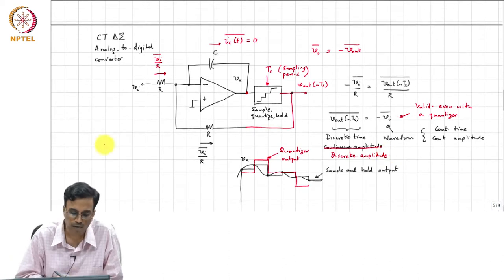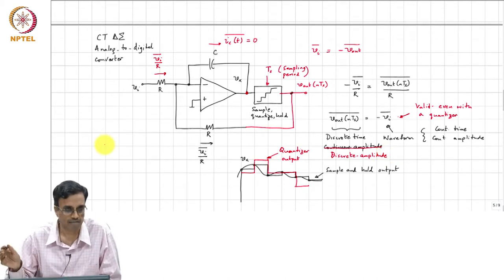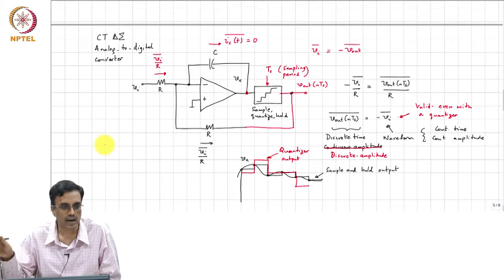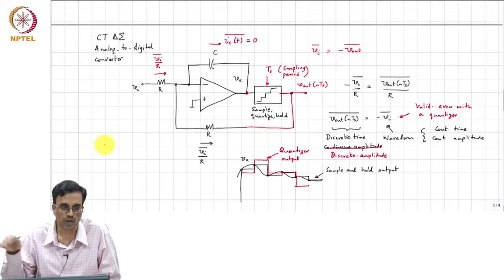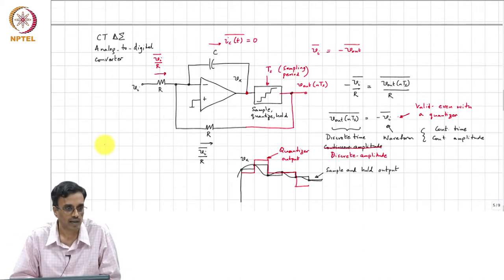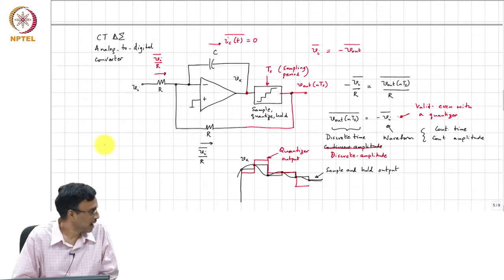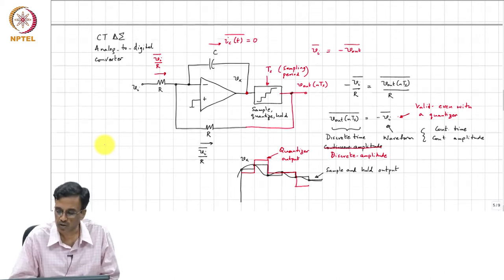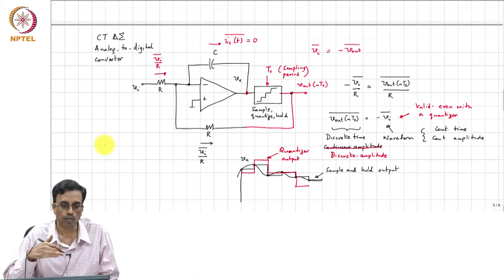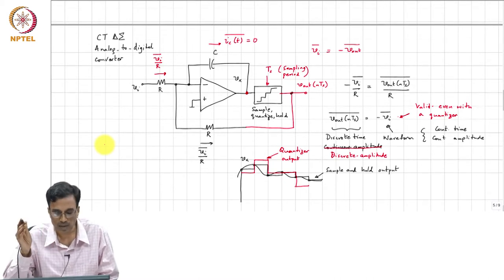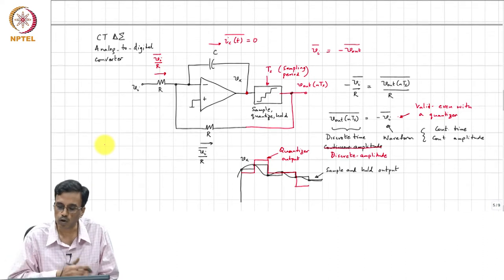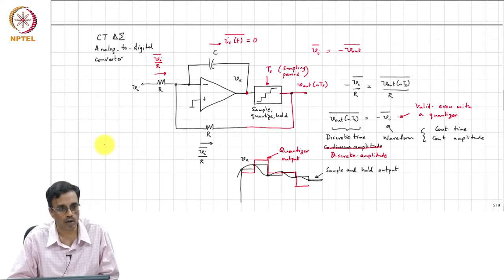If the input waveform V_I of T is slow enough, then on average V_I remains the same as V_I of T, and therefore the output sequence remains valid. Basically, if you take the output sequence which is quantized — both in amplitude and time — and you average the output sequence, you will get a good approximation to the average value of the input waveform.